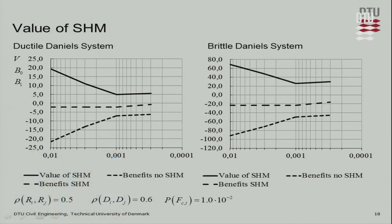On the left side we have a ductile Daniels system, and here a brittle Daniels system. Shown are the probability of component deterioration failure thresholds for structural integrity management — the threshold maintained throughout the life cycle, at which point an inspection event takes place. This was quantified with a correlation of 0.5 between resistances and a correlation coefficient of 0.6 between damages. The component probability of failure is 1.0 × 10⁻².